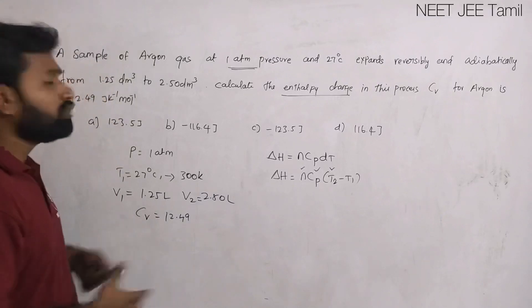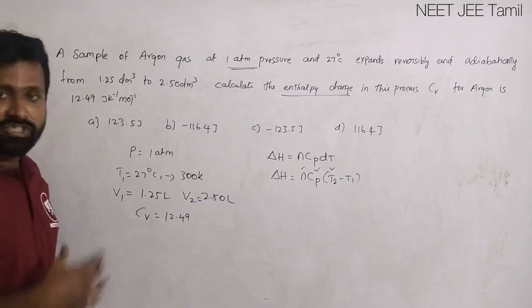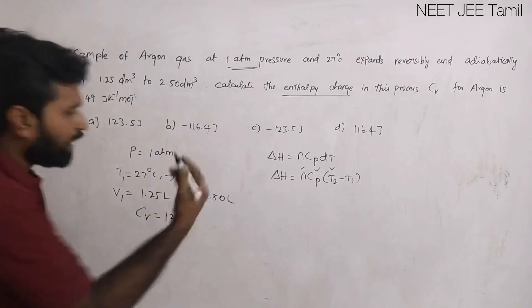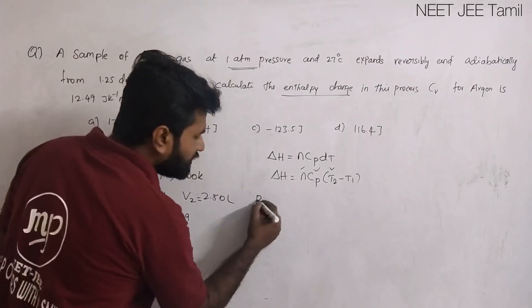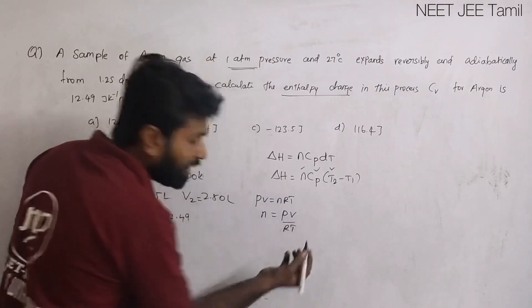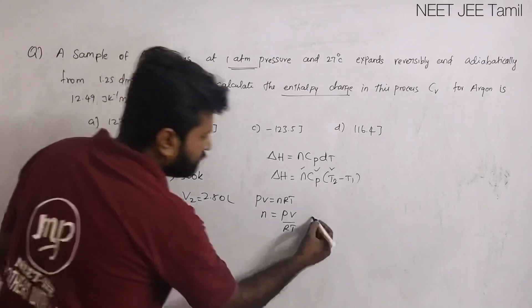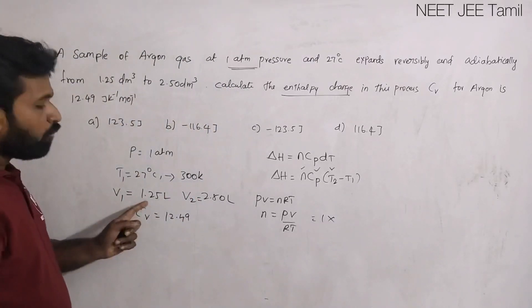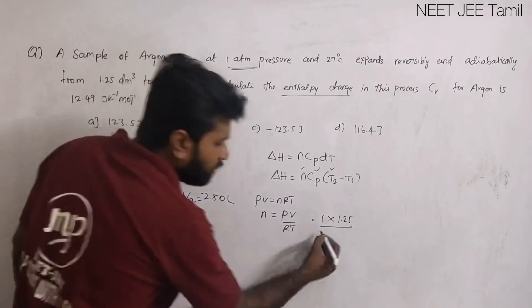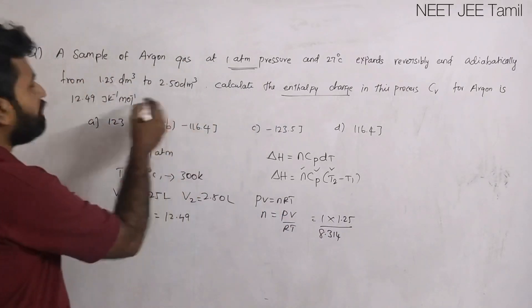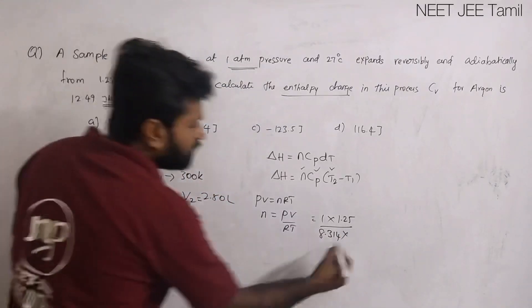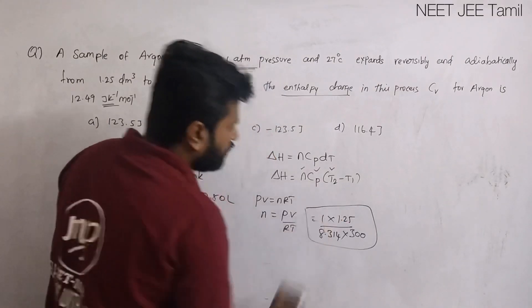First, we need n, the number of moles. Since thermodynamics uses the ideal gas equation, n is equal to PV divided by RT. Substituting: pressure is 1, initial volume is 1.25 litre, R is 8.314 joule per kelvin per mole, and temperature is 300 Kelvin. This gives us the n value.